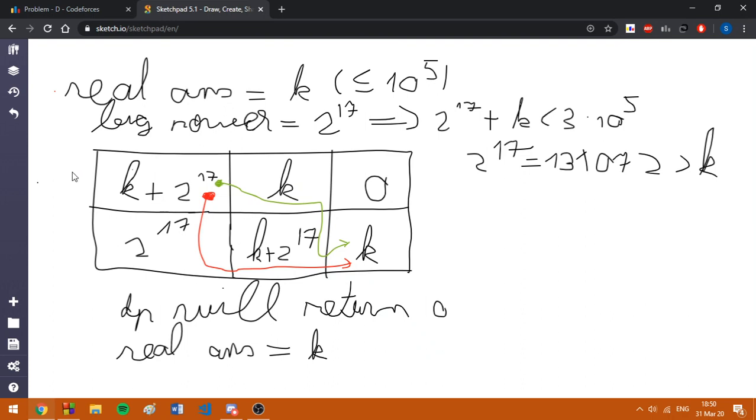So, this matrix is quite small, 2 lines and 3 columns. And we're going to start on position 1,1 with k plus 2^17.